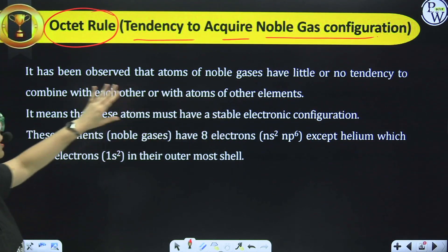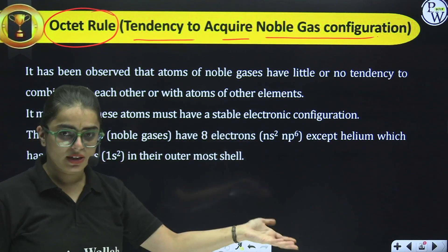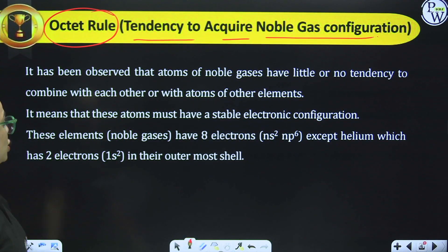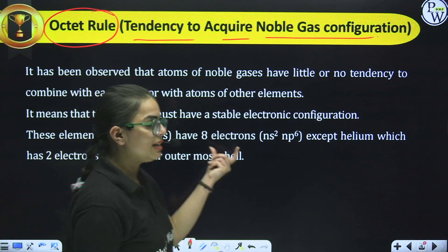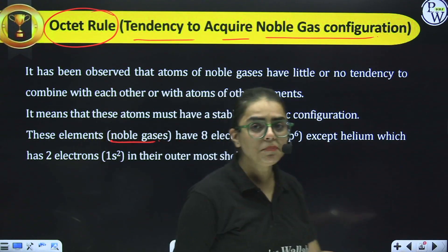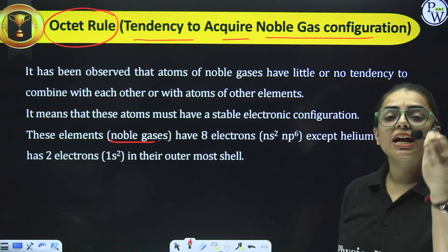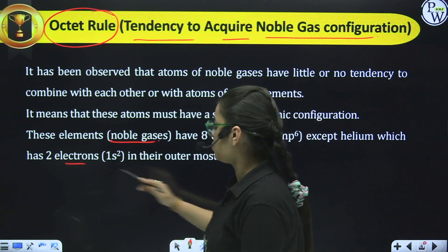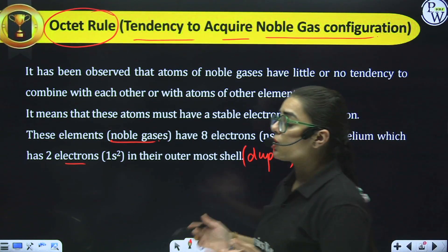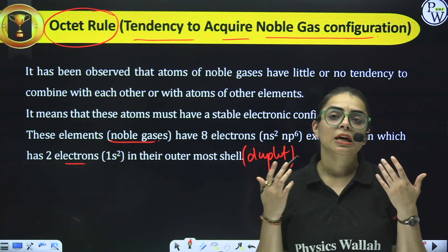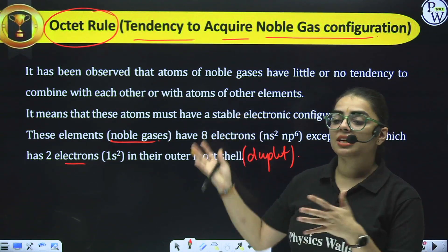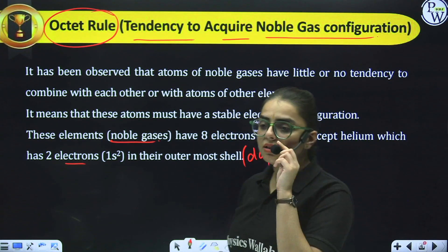It has been observed that atoms of noble gases have little or no tendency to combine with other elements, meaning these atoms must have a stable electronic configuration. The general configuration is ns², np⁶, except helium which has 1s² with 2 electrons. If an atom has a completely filled configuration, it is basically stable because its octet is complete. That is why atoms want to create bonds — so they can share or transfer electrons to complete the octet rule.